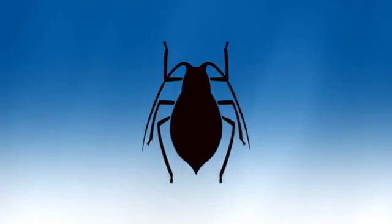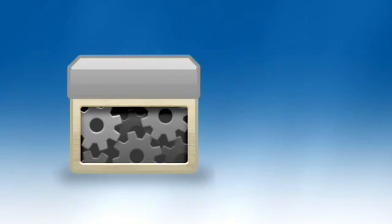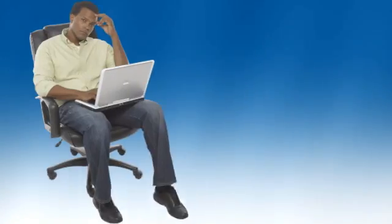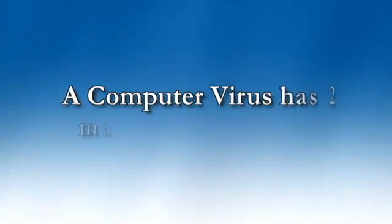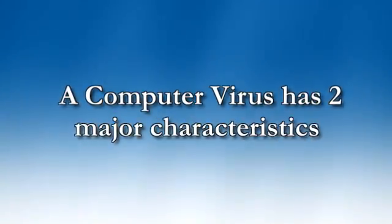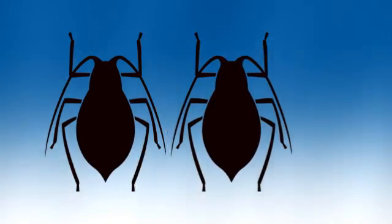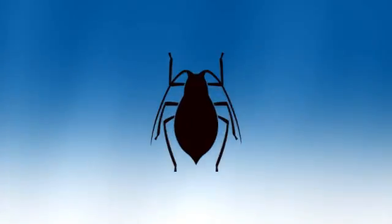First, what is a computer virus? A computer virus is a program that can copy itself and infect a computer without the permission or knowledge of the user. A computer virus has two major characteristics: the ability to replicate itself and the ability to attach itself to another computer file.